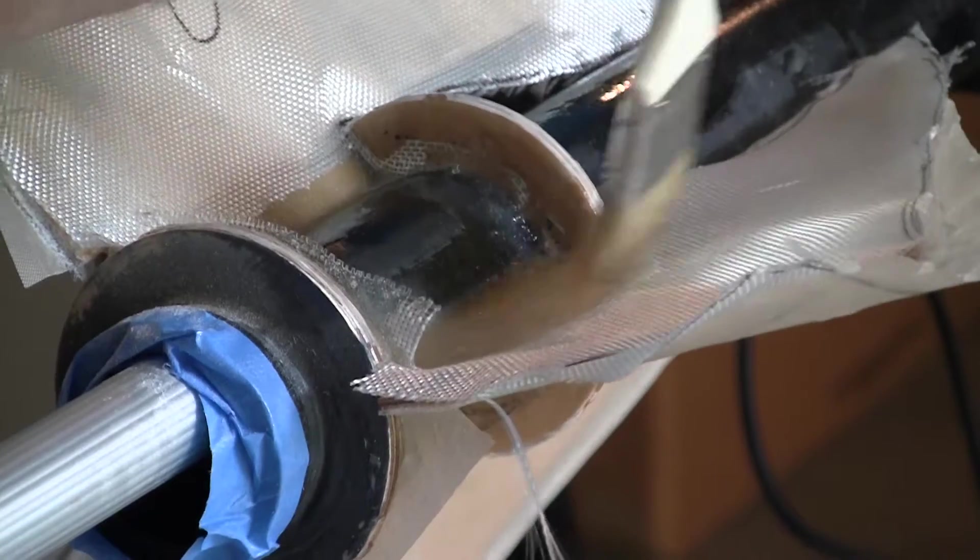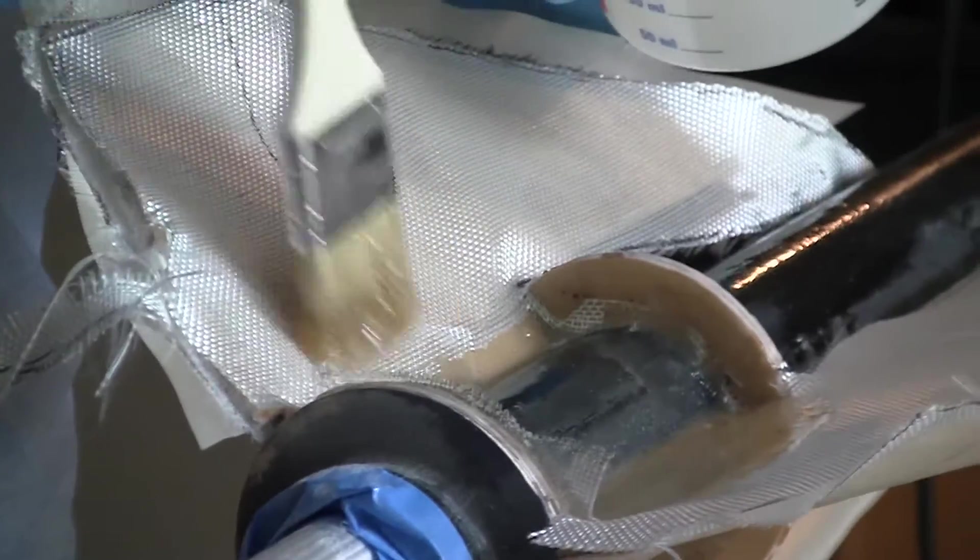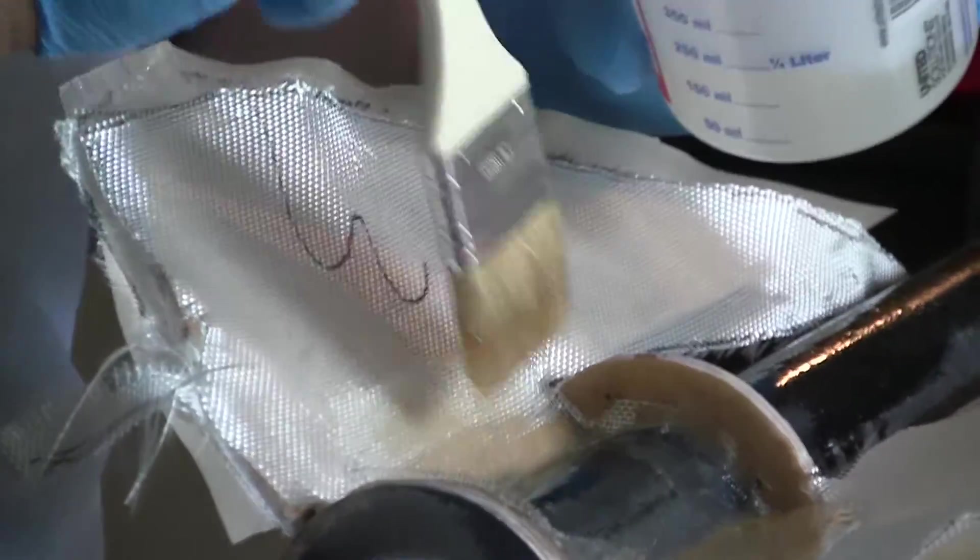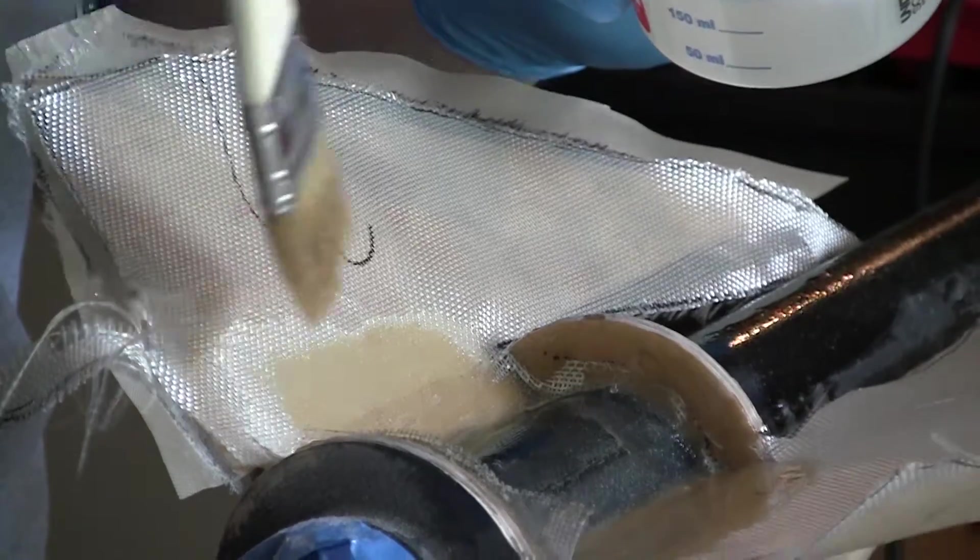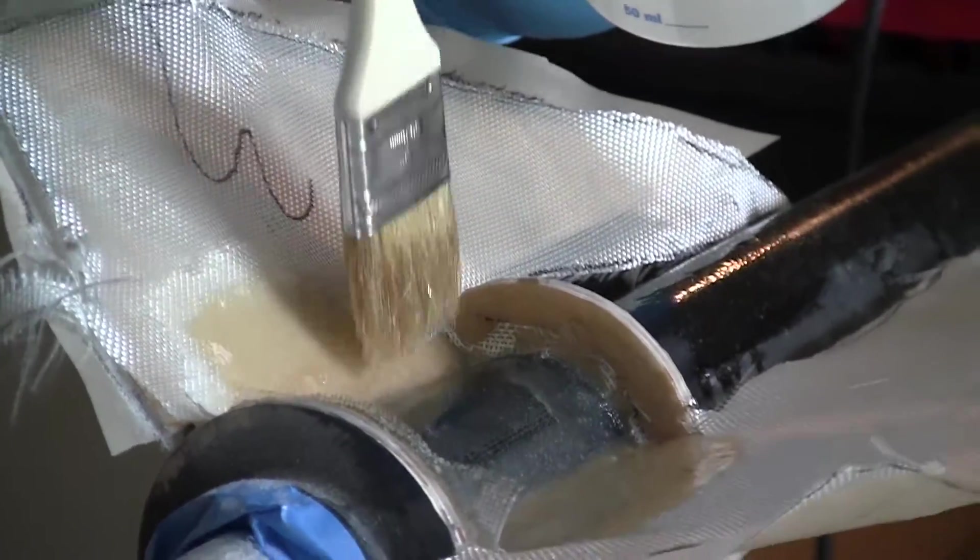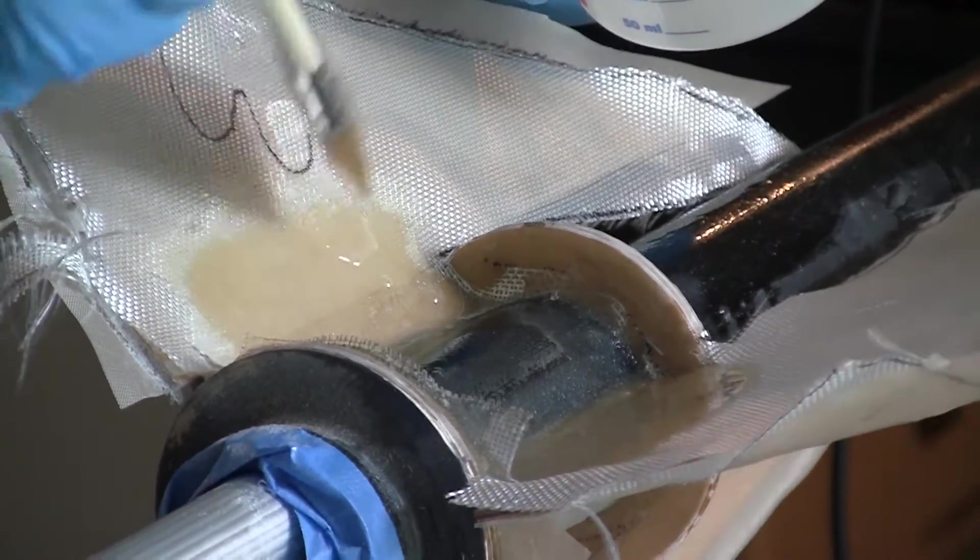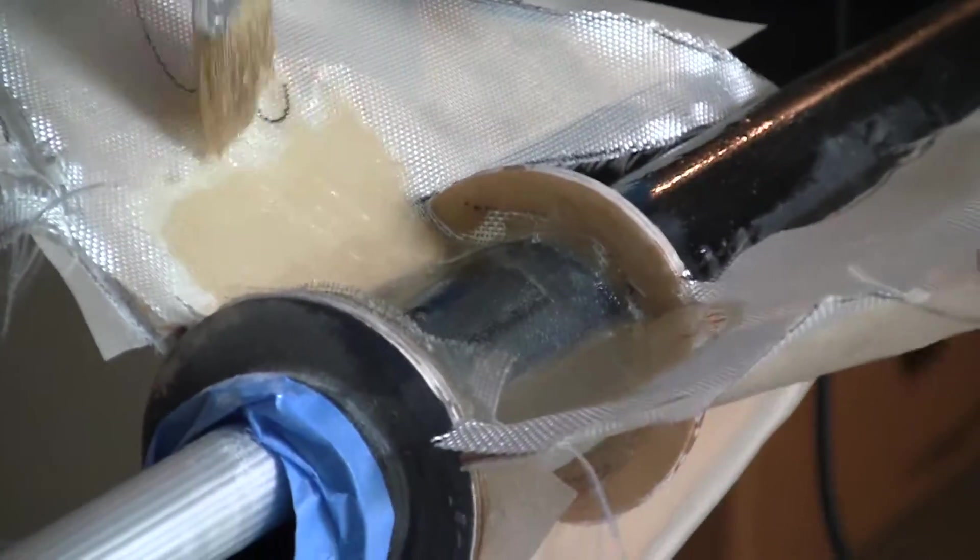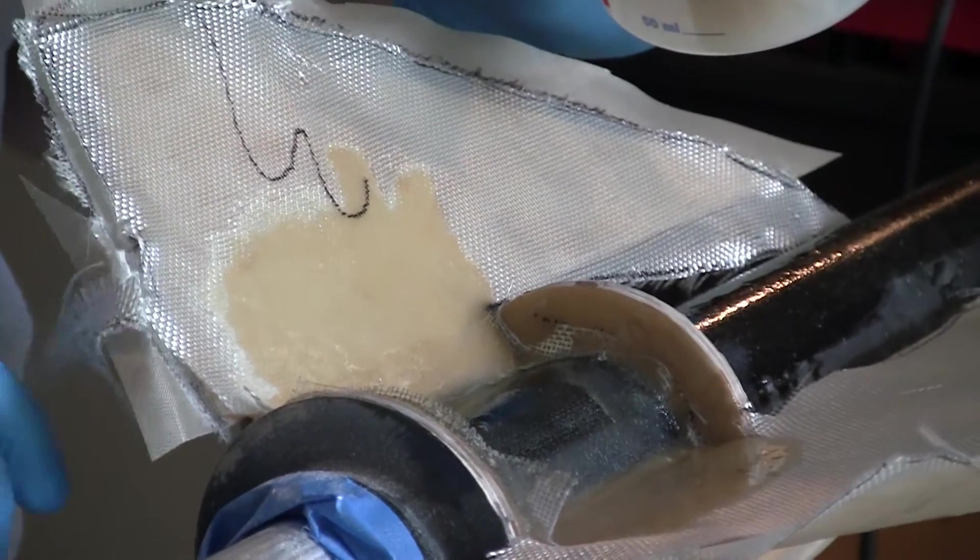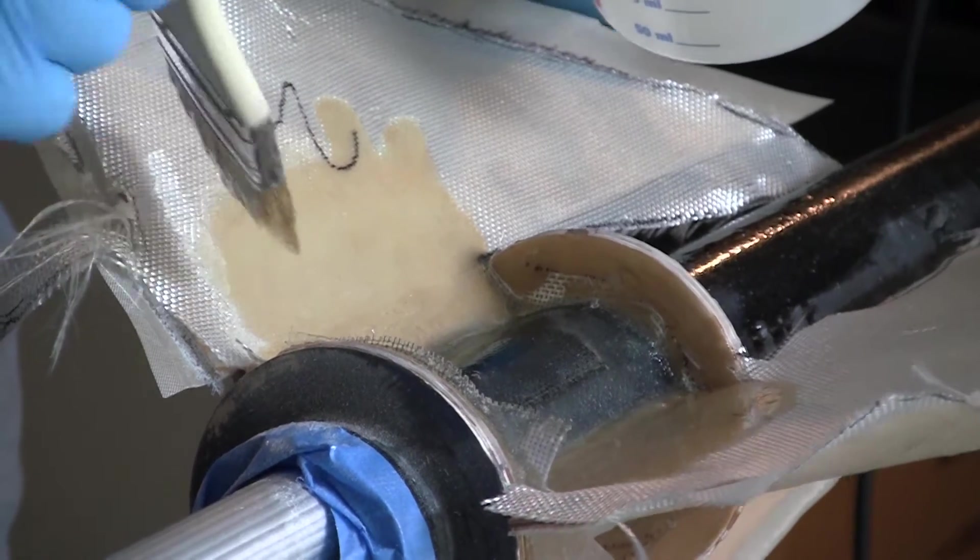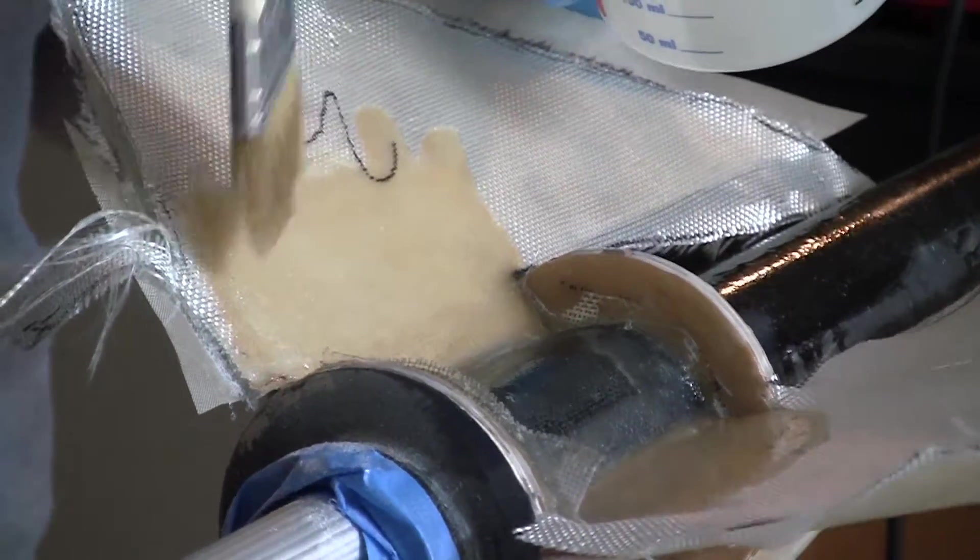And then as the engine tube is coated, we start working our way up the fins. The idea is you just start working outward, radiating outward. You smooth out any wrinkles, and if the fabric was cut right, it'll start laying down flat.